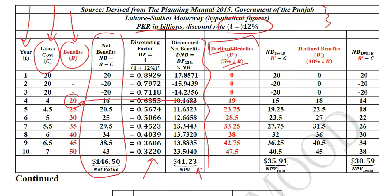These are the declined benefits — we have declined them by 5%. You can see that the value 20 reduces by 5%, and similarly 50 reduces to 47.5. This is the column of new benefits. Using those new benefits and the old costs to calculate net benefits — that is B-bar minus C — the new benefits minus the old costs gives us the net benefits after the 5% change.